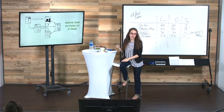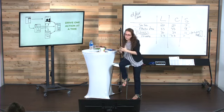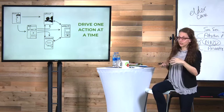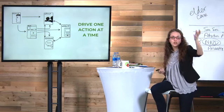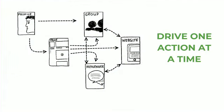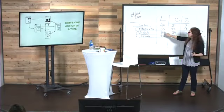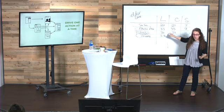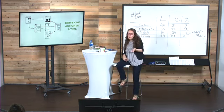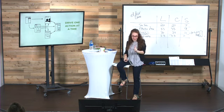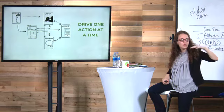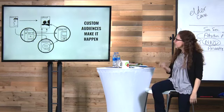We want to drive one action at a time. From our personal profile, share something into our group; then share from our page into our group; then from our page into messenger; then from our page to our website; then target a post to bring in new people. I run engagement ads to bring in new people and get those micro-engagements so I can invite them to like my page, and macro-engagements because that's what Facebook rewards. The more macro-engagements, the more your content gets seen next time.